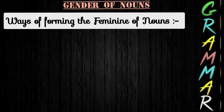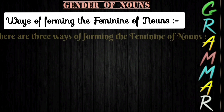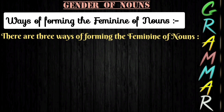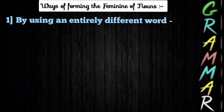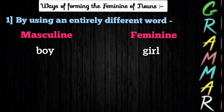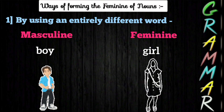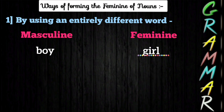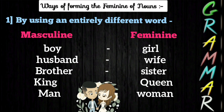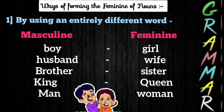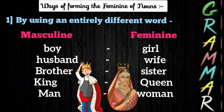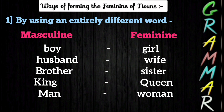Many times it is asked to convert a masculine gender into a feminine gender. There are three ways of forming the feminine of nouns. The first way is by using an entirely different word. For example, the masculine gender 'boy' becomes 'girl' in the feminine. Other examples: husband/wife, brother/sister, king/queen, man/woman, etc. In all these conversions we have used an entirely different word.